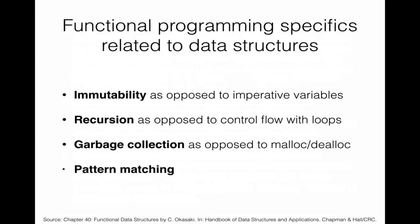In a functional programming language like Haskell, you have immutability — there are no side effects. Another big difference compared to imperative languages is that we heavily rely on recursion when implementing data structures rather than loop constructs. Compared to C or other languages with explicit allocation and de-allocation, in functional programming we entirely rely on garbage collection. We also typically use pattern matching to implement operations.